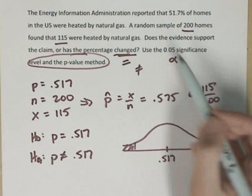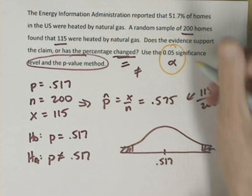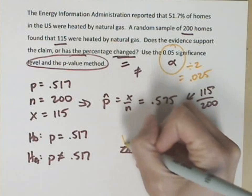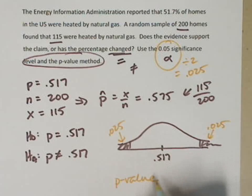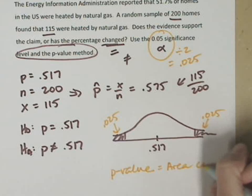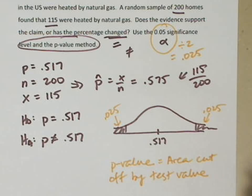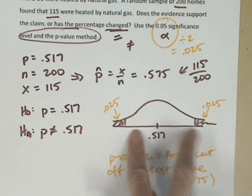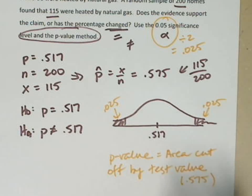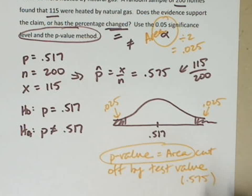I've set up enough to do this using the calculator. What I want to find is the p-value. My significance level is .05. I have two tails, so if I divide that by two, I get .025 in either tail. When I find the p-value, I want to know if the p-value, which is the area cut off by my test value, my sample percent .575, fits neatly into these two tails or if it spills out into the fail-to-reject region.